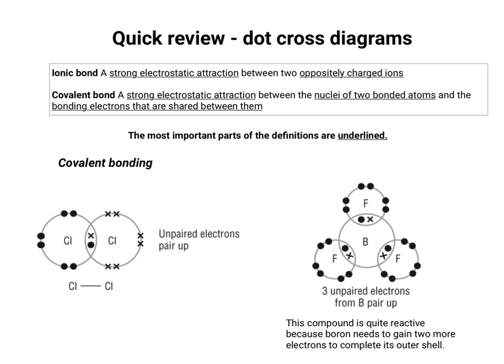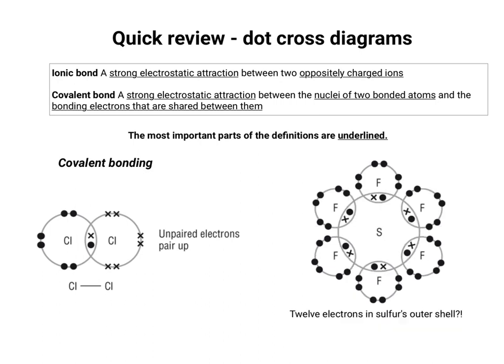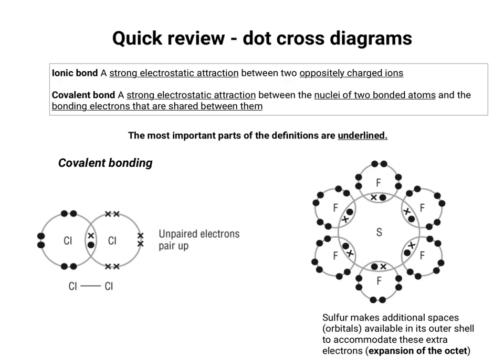An unusual case is boron trifluoride — boron only has six electrons but needs two more, so BF3 is quite reactive. Here's another unusual one: 12 electrons in sulphur's outer shell. Covalent bonds can offer stability for an atom — the more covalent bonds an atom can undergo, the more stable it's going to be, so sulphur is quite happy to have six covalent bonds with six different fluorine atoms. The key is that sulphur makes additional space available by moving some of its orbitals to its outer shell — this is called expansion of the octet, since twelve electrons is bigger than eight.